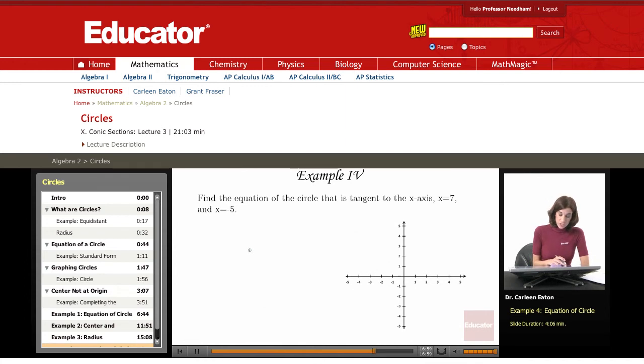Example 4: Find the equation of the circle that is tangent to the x-axis, to x equals 7, and x equals negative 5. So we're given a bunch of information about this circle and told to put it in standard form.